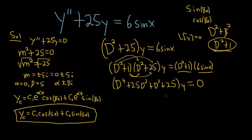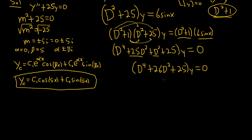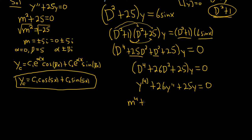Combining like terms: D⁴ + 26D² + 25, times y, equals 0. So we have a new differential equation. In regular DE form it looks like the fourth derivative plus 26 times the second derivative plus 25y equals 0. Since it's homogeneous we can find the characteristic equation: m⁴ + 26m² + 25 = 0.